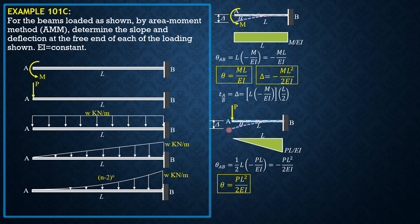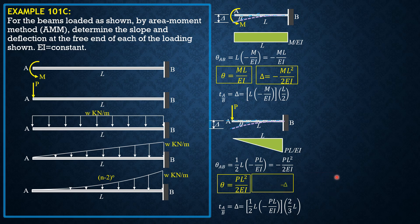For the deviation of A relative to the tangent at B — because the reference tangent at B is horizontal, that deviation is automatically delta. It equals one-half of L times negative PL over EI, times the moment arm of the centroid from the free end A, which is two-thirds of L. Canceling the 2 gives delta = -PL³/3EI.